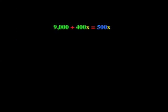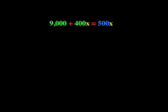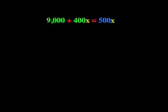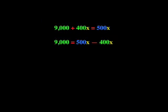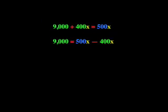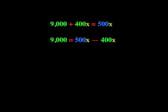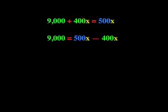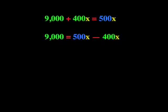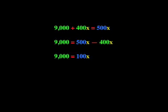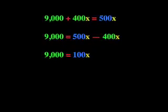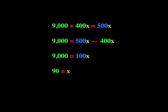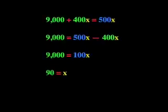So all those words boil down to one simple equation with one unknown: 9,000 plus 400X equals 500X. We can put all of the X's on one side of the equation so that 9,000 equals 500X minus 400X. This means that 9,000 equals 100X, so X equals 90.